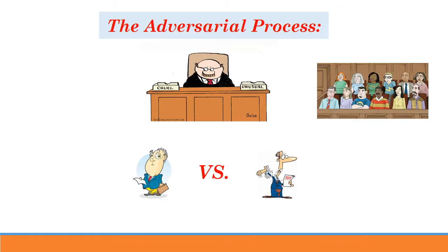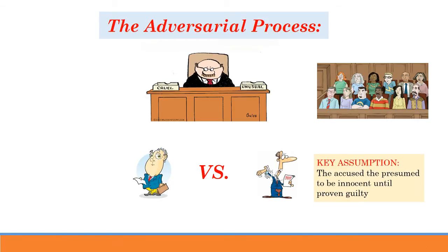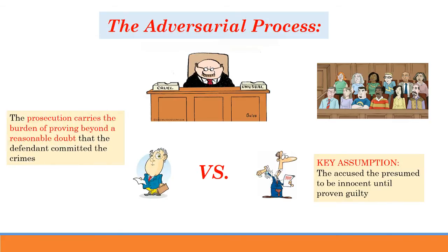Some important aspects to remember about this adversarial process: the first one is that the accused is presumed to be innocent until proven guilty. So ultimately, the defense attorney doesn't really have to do anything — his client is presumed to be innocent. He has to be proven guilty, and that job falls to the prosecution. The prosecution carries the burden of proving beyond a reasonable doubt that the defendant committed the crime. It is the prosecution that has that burden of proof.